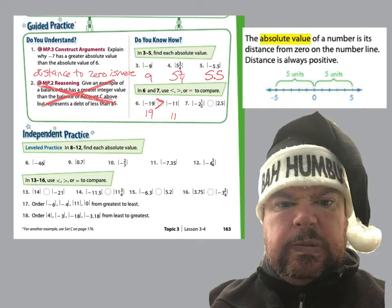Then we have negative 2 and 1 half, or the absolute value of negative 2 and 1 half, which is 2 and 1 half. And then we have 2 and 5 tenths, which is equivalent — or equal — to 2 and 1 half.